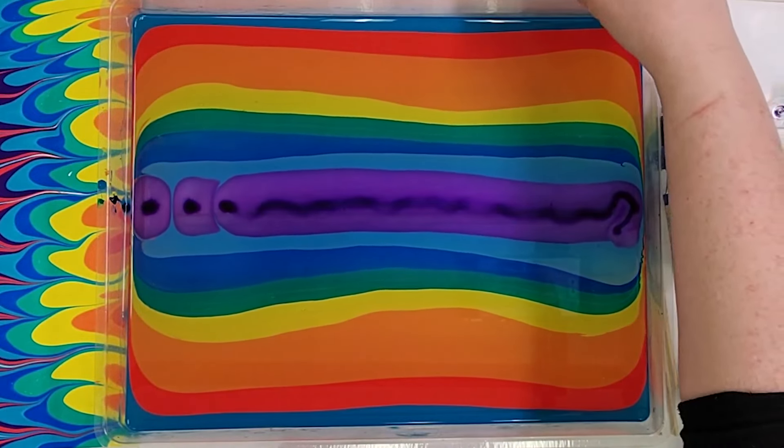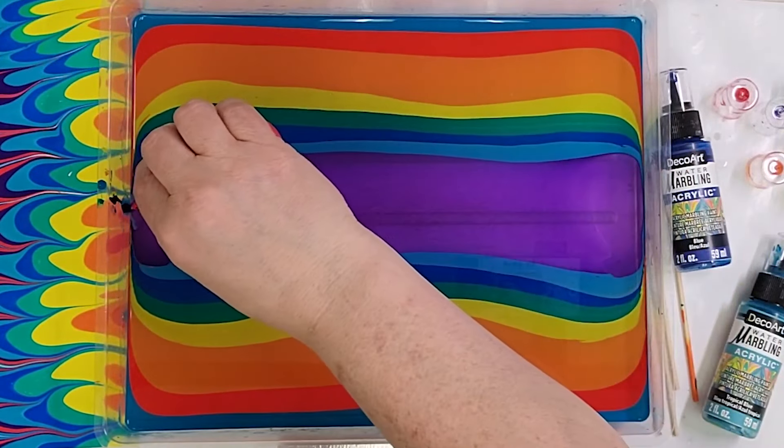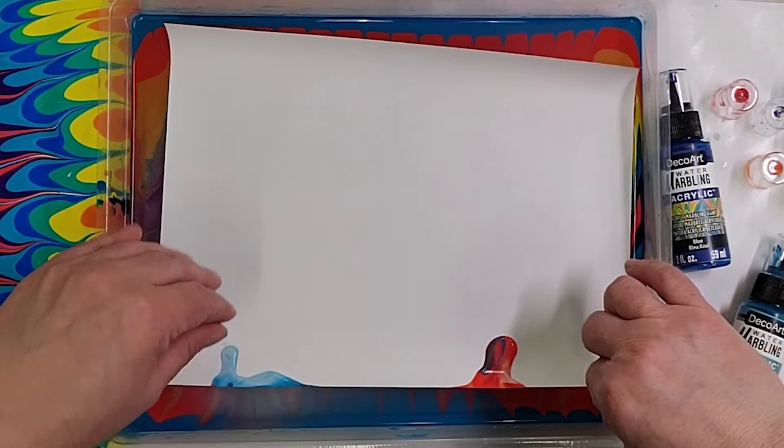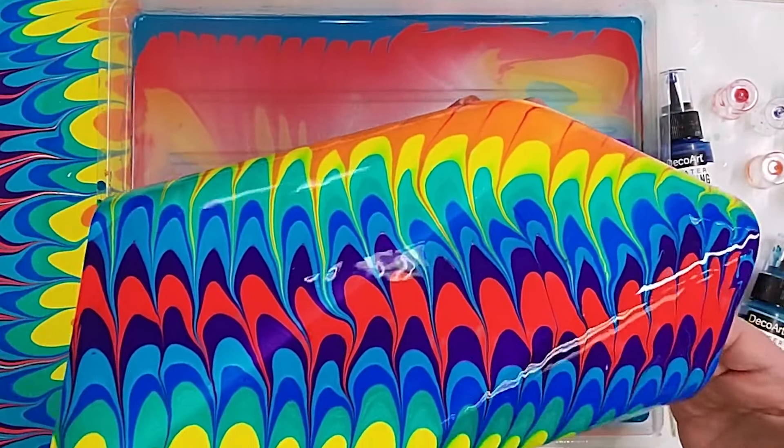Water marbling is the process of floating very thin paint on the surface of very thick water and using tools to manipulate different designs to create a one-of-a-kind print.